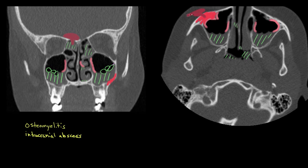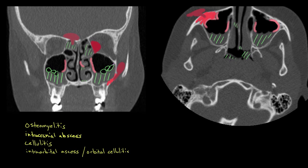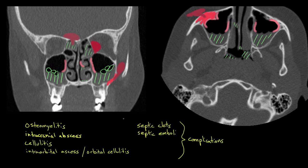If the infection spreads out into the soft tissues, that is termed cellulitis. If the infection spreads through the ethmoid air cells into the orbit — where your eyeball lives — that can cause an intraorbital abscess or orbital cellulitis, which is also a severe complication. There are also important arteries and veins running through your head and neck; if infection gets into them, it can cause infected or septic clots, and can travel to other parts of the body as septic emboli. All these complications are much more common in severe disease, which is usually bacterial. If your immune system isn't working properly, you're also more prone to these complications.